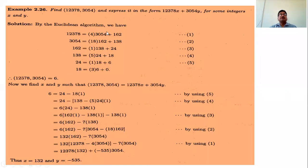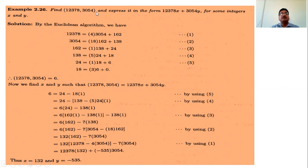Today's topic for discussion is Greatest Common Divisors, with examples. We need to find the greatest common divisor of the two numbers 12378 and 3054. This is the notation for Greatest Common Divisor, and we have to express it in the form for some integers x and y.